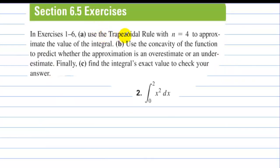Section 6.5. Use the trapezoidal rule with n equals 4 to approximate the value of the integral. Use the concavity of the function to predict whether the approximation is an overestimate or an underestimate. And finally, find the integral's exact value to check your answer. We're going to integrate from 0 to 2 of x squared using 4 subintervals. That means we're going to go from 0 to 0.5 to 1 to 1.5 to 2. That would be 1, 2, 3, 4 subintervals.